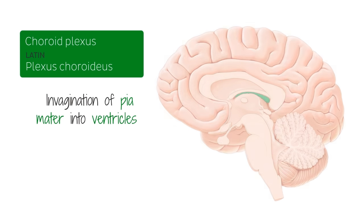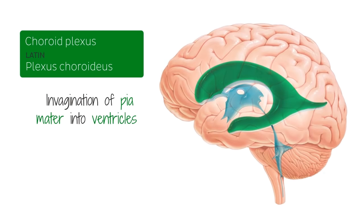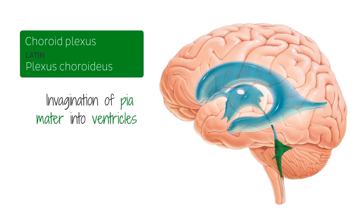These ventricles are the paired lateral ventricles, the third ventricle, and the fourth ventricle, shown down here in the cerebellum.